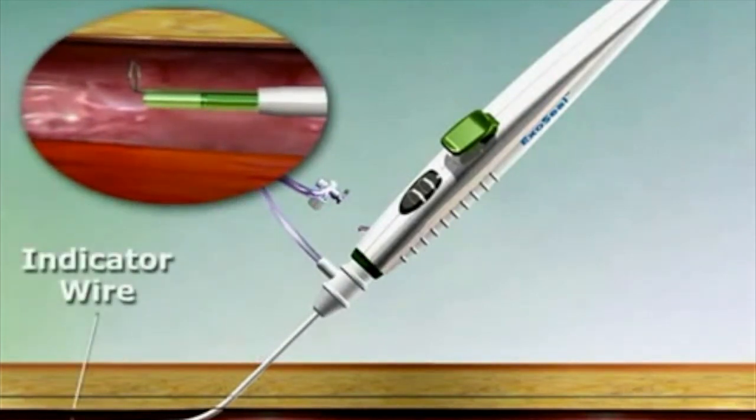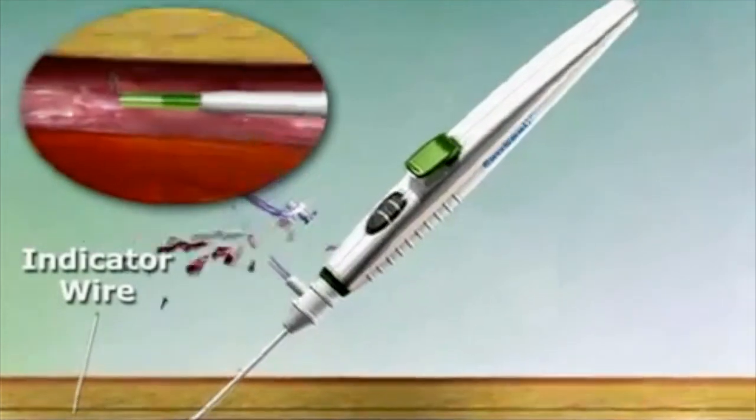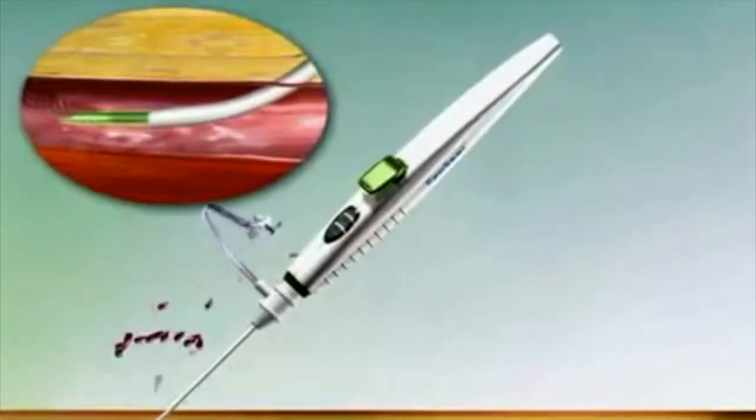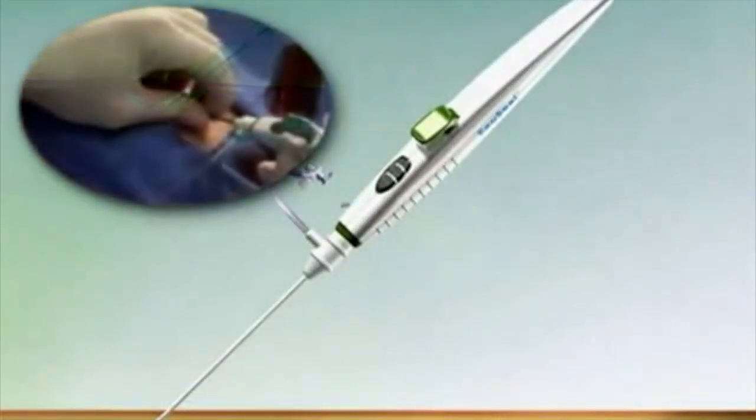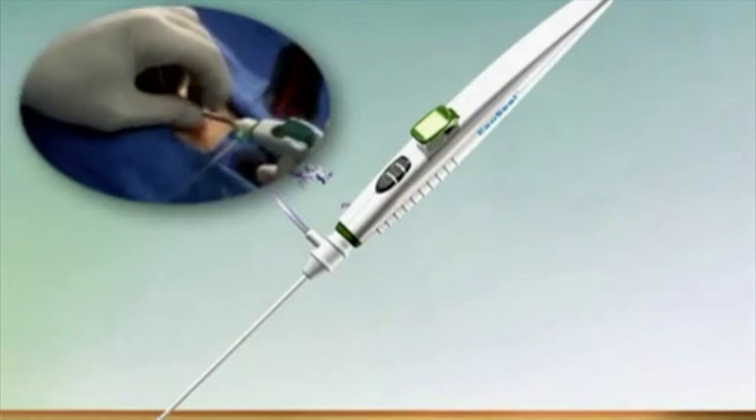Slowly retract the ExoSeal device and the femoral sheath as one unit following the angle of the tissue tract less than or equal to 45 degrees until pulsatile flow has significantly slowed or stopped from the bleed back indicator.